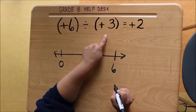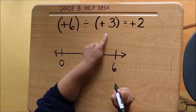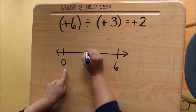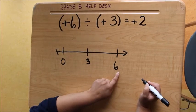Your divisor tells you how many jumps, how many numbers are going to be in each jump. So in this case it's 3. So from 0 to 3 and then our end point is 6.